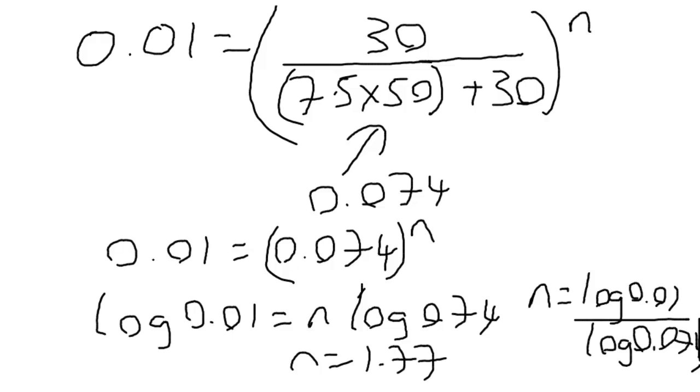Obviously, we can't do 1.77 extractions, so we'll say we need to do two extractions. So in this case, you would extract with the organic solvent, remove that, and then add more organic solvent, and do a second extraction.